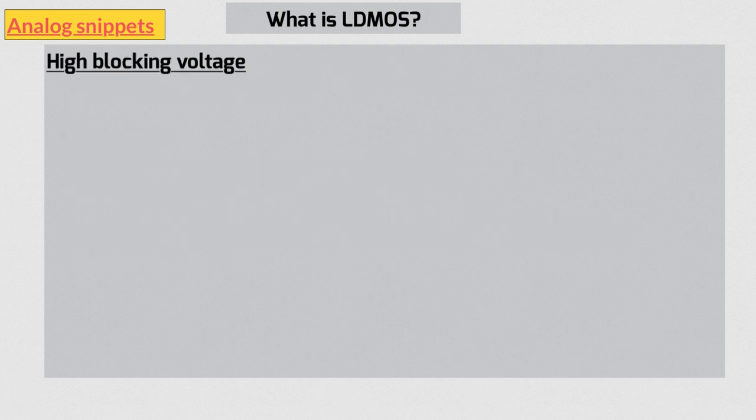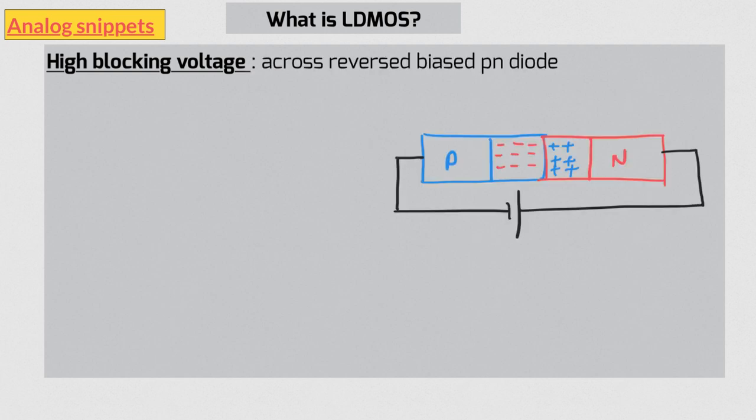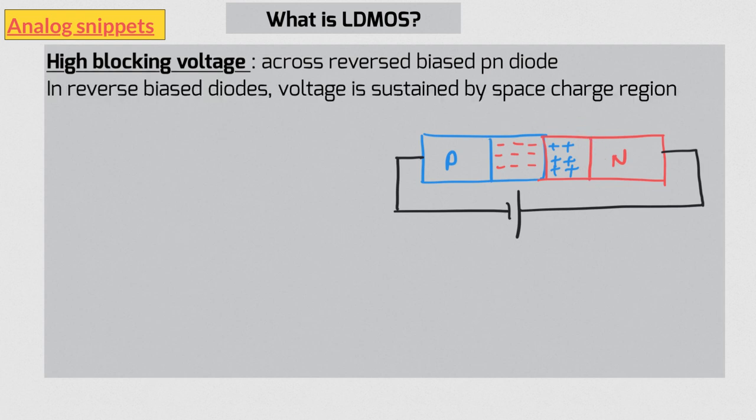A high blocking voltage is sustained across a suitably designed reverse biased p-n junction diode. P-n junction diodes have bulk regions and space charge region. Bulk regions are simply doped pieces of semiconductor, and space charge region is again doped piece of semiconductor but without mobile carriers. During reverse bias condition, only a very small leakage current flows through the circuit, and that means there is no IR drop in the bulk regions, and that means all the voltage drop happens across space charge region. That is the key point to remember.